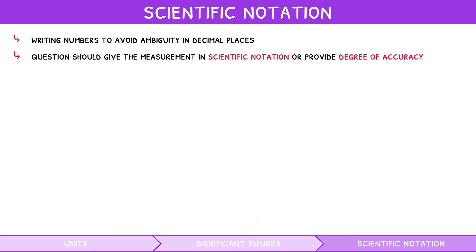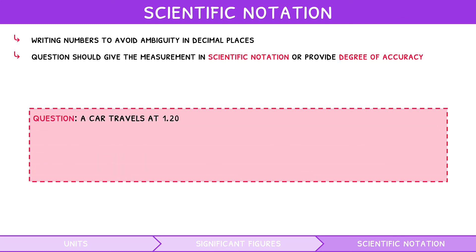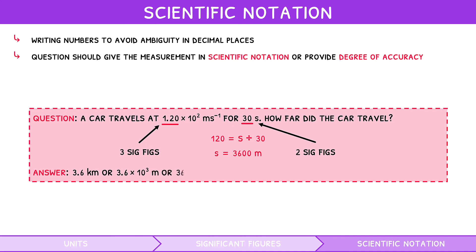So, let's take a look at an example. A car travels at 1.20 times 10 to the 2 meters per second for 30 seconds. How far did the car travel? So, speed equals distance divided by time, and thus the distance is 3,600 meters. 1.20 times 10 to the 2 has 3 sig figs, and we assume 30 has 2 sig figs. We use the smallest number of sig figs when the provided values do not match, so the answer must have 2 sig figs. Thus, the final answer is 3.6 kilometers, or 3.6 times 10 to the 3 meters, or 3,600 meters, as these all round to 2 sig figs.